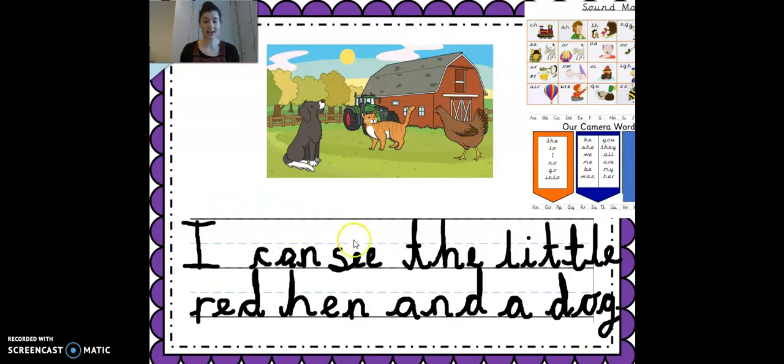So let's now check that our sentence makes sense. I, can, see, the, little, red, hen, and, a, dog. And that is just like what you will be doing in your writing today. I put up a picture and what I want you to do is think about what you can see in the picture and have a go at writing it. You've got your sound map and you've got a word map to help you. See if you can come up with a sentence. Now I wonder. Maybe you could even come up with three sentences. See how you get on and have a go coming up with some sentences.